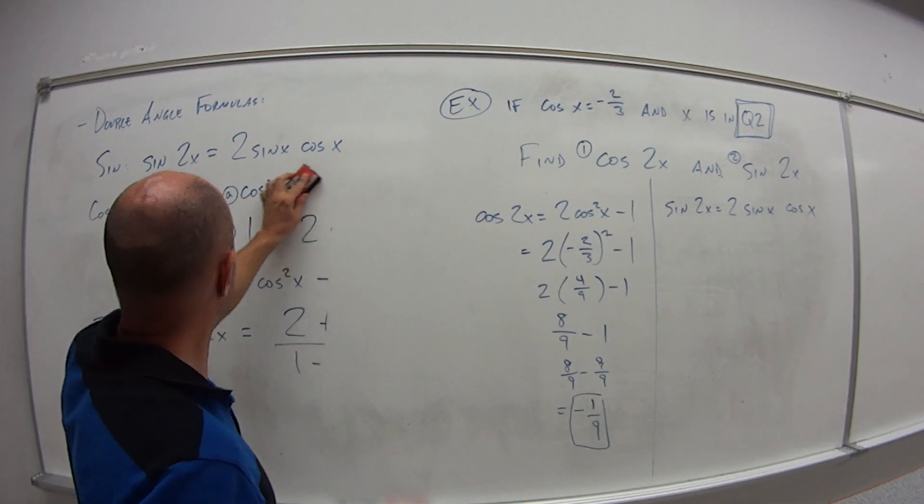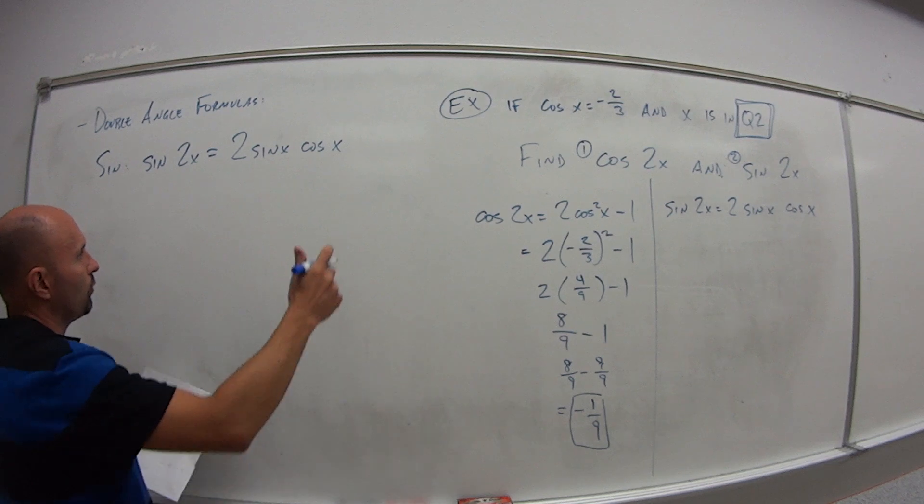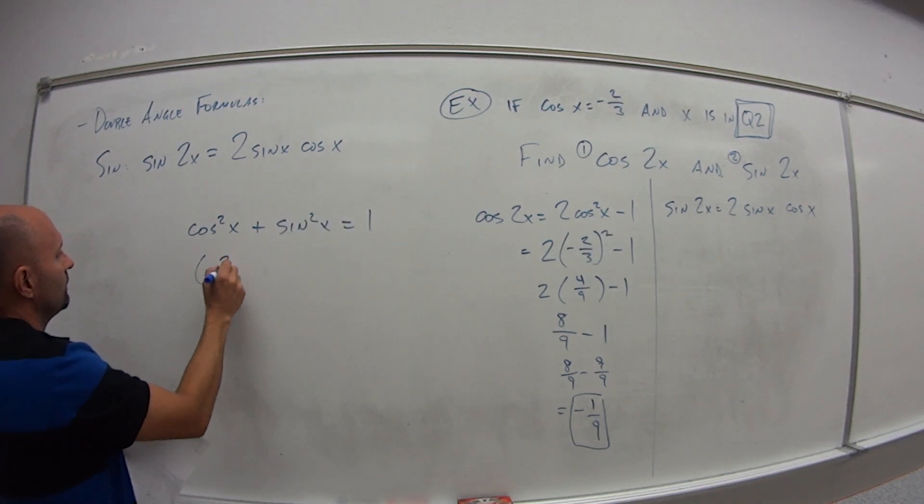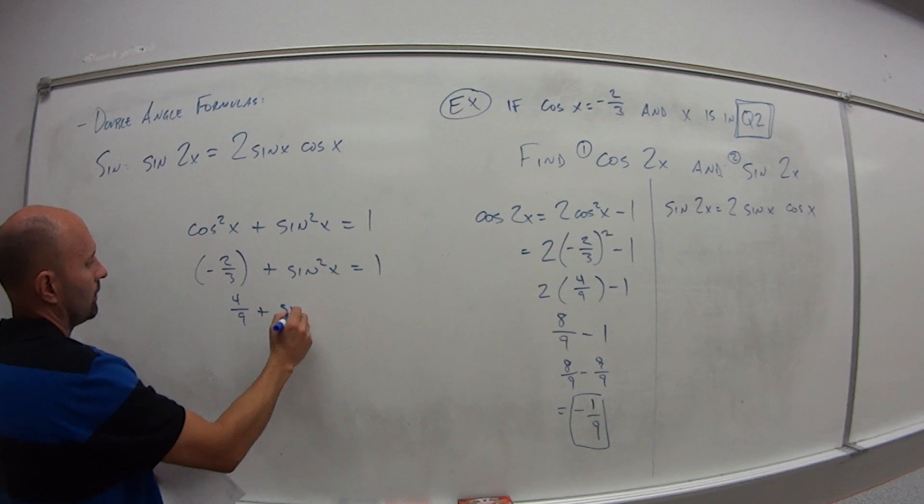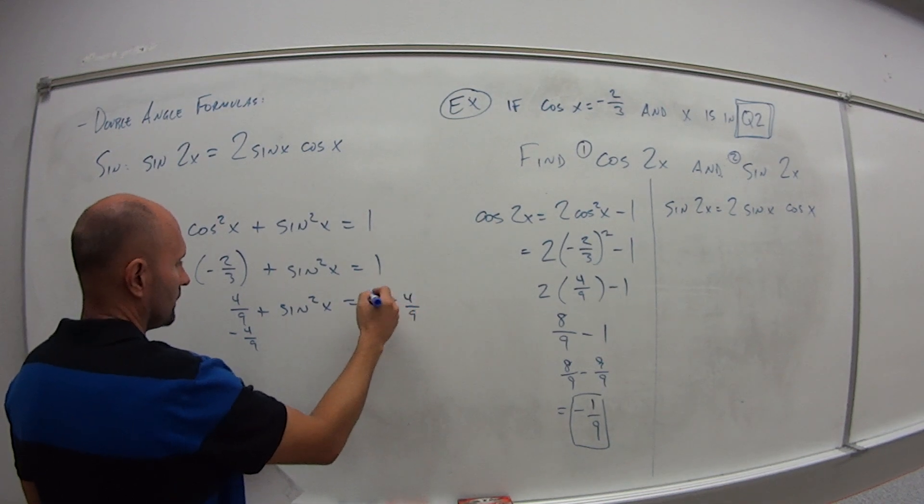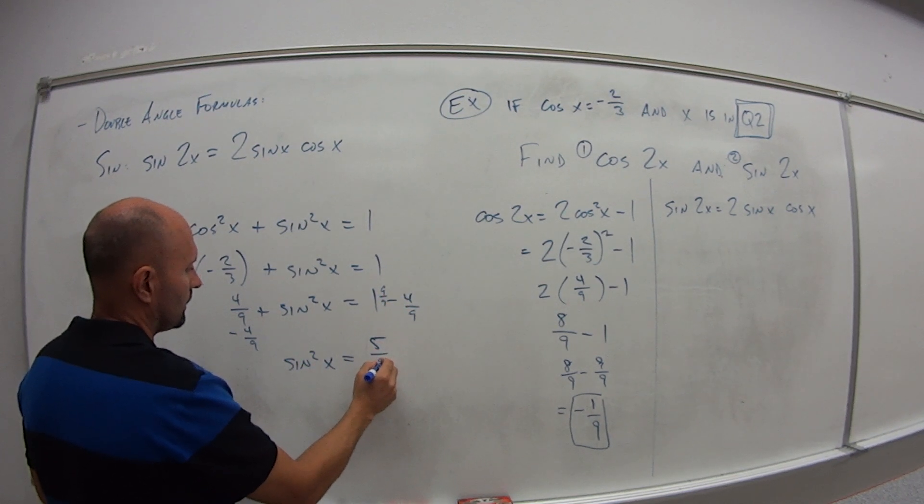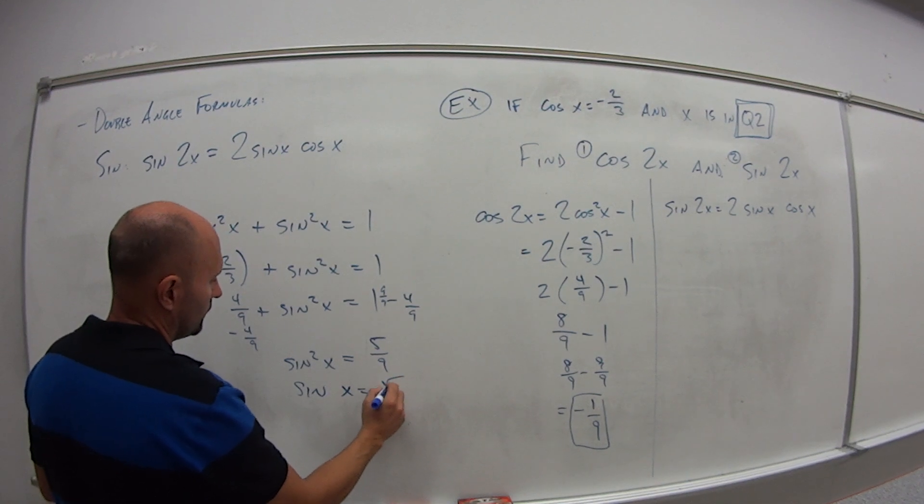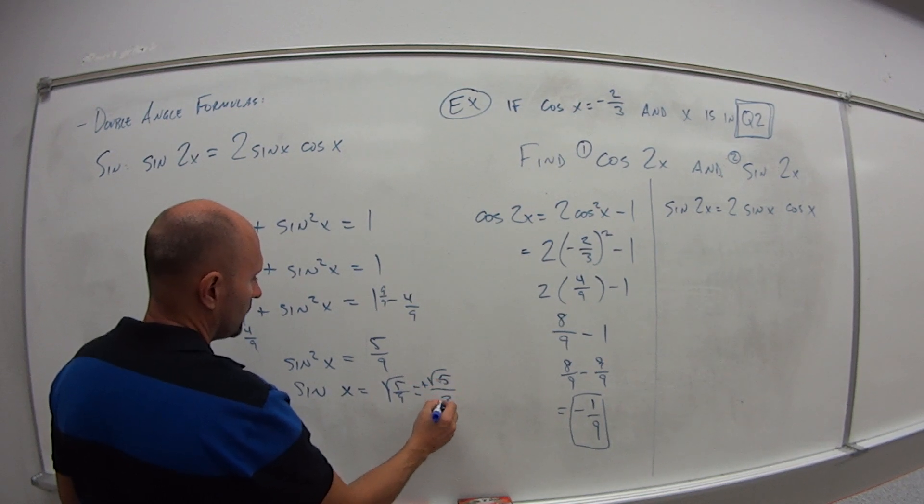We're going to use our Pythagorean identity which is cosine squared plus sine squared equals 1. So cosine squared x plus sine squared x equals 1. Cosine of x is negative 2/3, so negative 2/3 squared plus sine squared x equals 1. So this is 4/9 plus sine squared x equals 1. If I subtract 4/9 from both sides, this guy is like 9/9. So I get sine squared x equals 9/9 minus 4/9 is 5/9. If I take square root of both sides, I get sine of x equals plus or minus square root of 5 over 3.